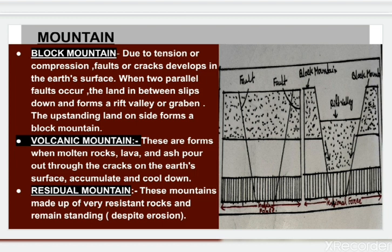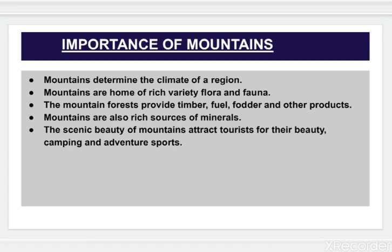Then, volcanic mountains. These are formed when molten rocks, lava, and ash pour out through the cracks on the earth's surface, accumulate, and cool down. Then, residual mountains. These mountains are made up of very resistant rock and remain standing despite erosion.